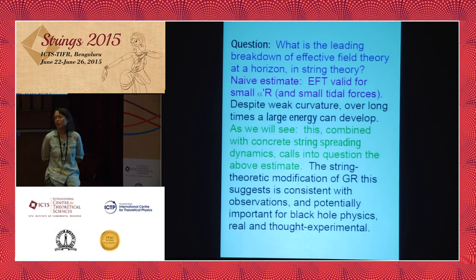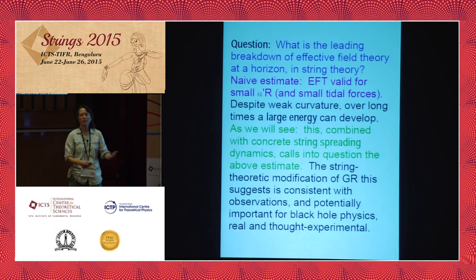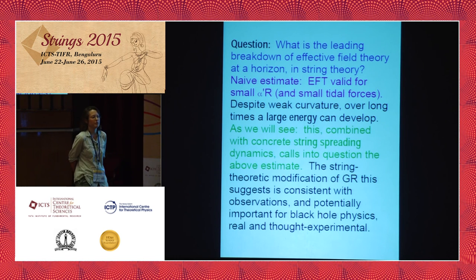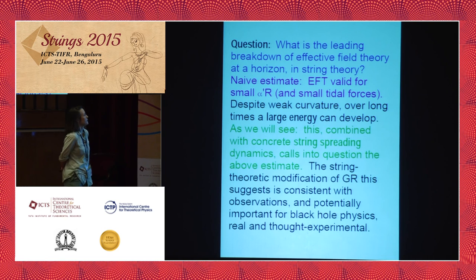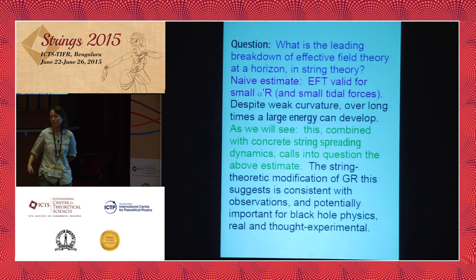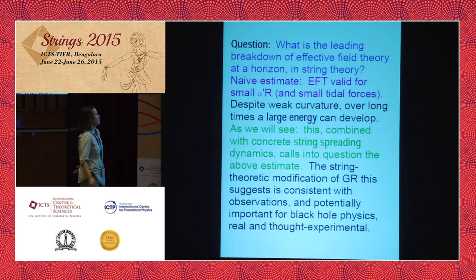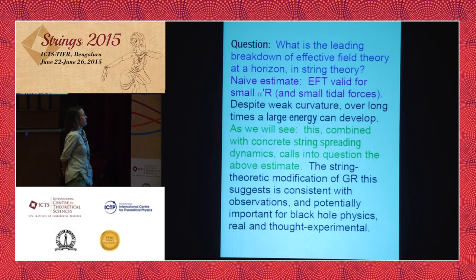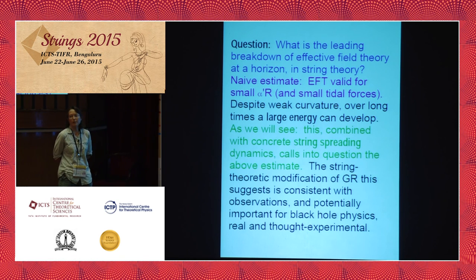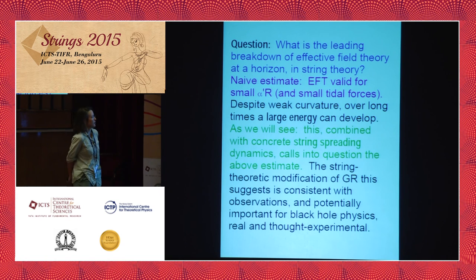The basic question here, as far as it comes to horizon physics — both for black holes and for cosmology — is a very simply stated question: what is the leading effect in string theory causing a breakdown of effective field theory at horizons? The naive estimate would be that effective field theory is a very good approximation if the curvature in string units is small and the tidal forces are similarly small.